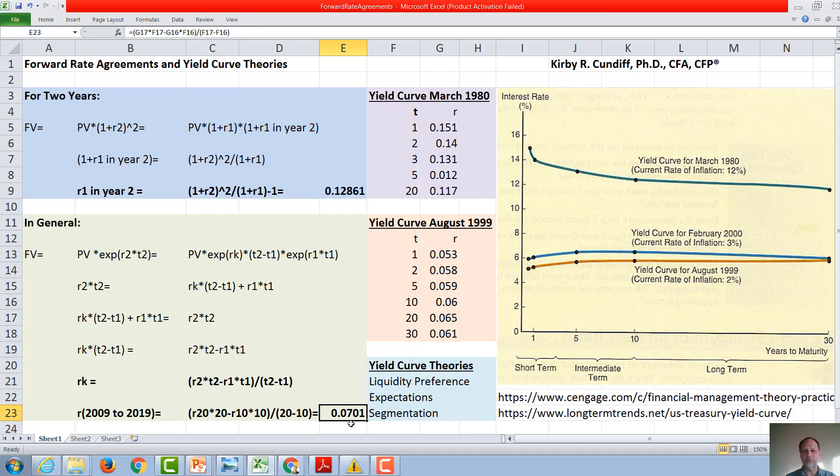So since we have an upward sloping yield curve under expectations theory, we are expecting interest rates to go up, and we would have to have a forward agreement during that time period that is slightly higher than the interest rates in condition, in this case for a 10-year period today, and 7% is higher than the interest rates on here.